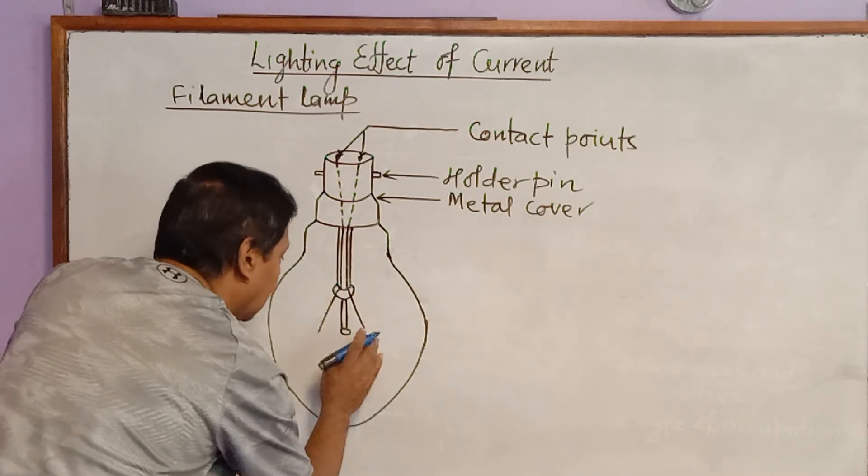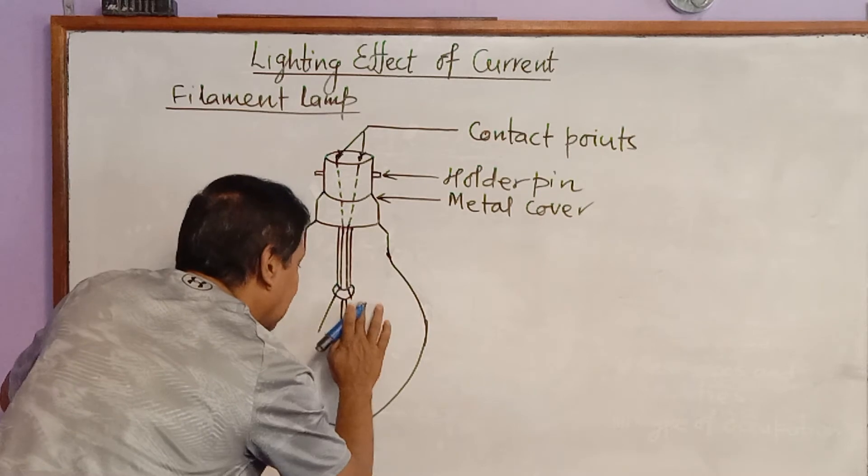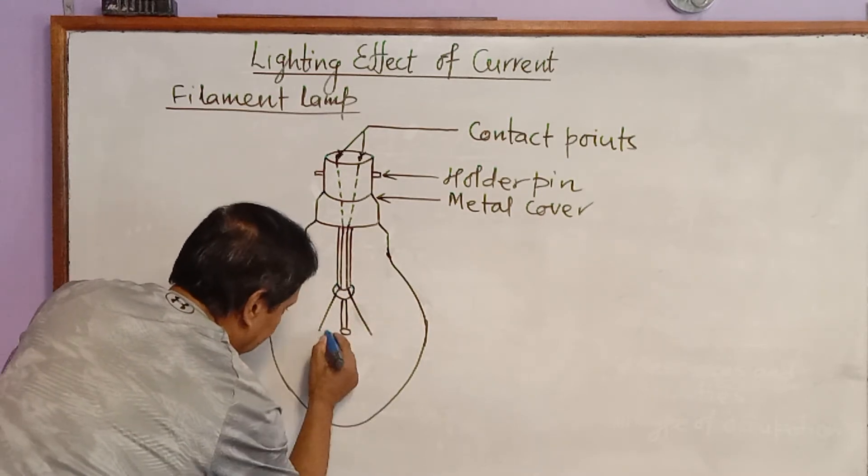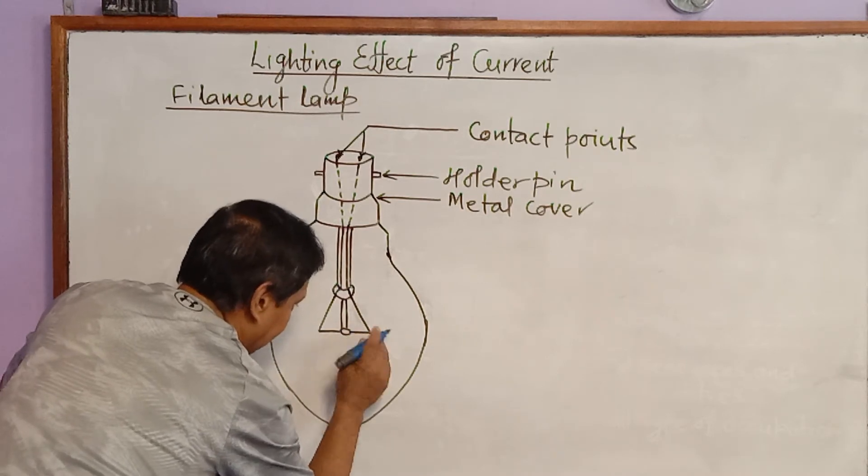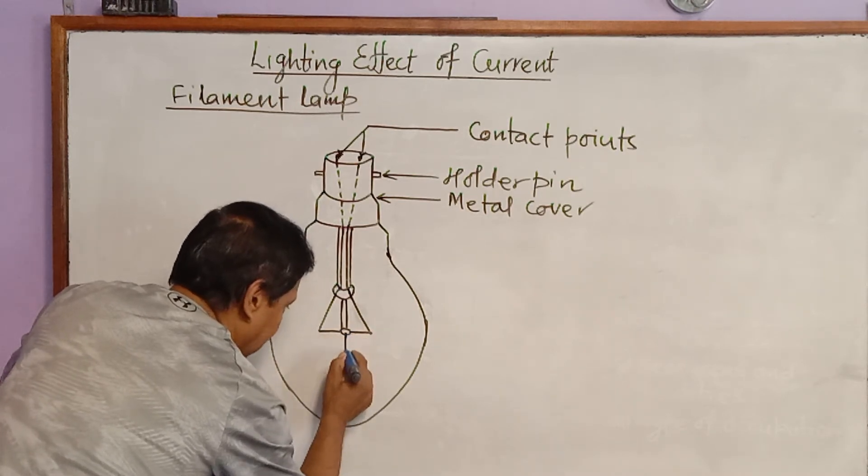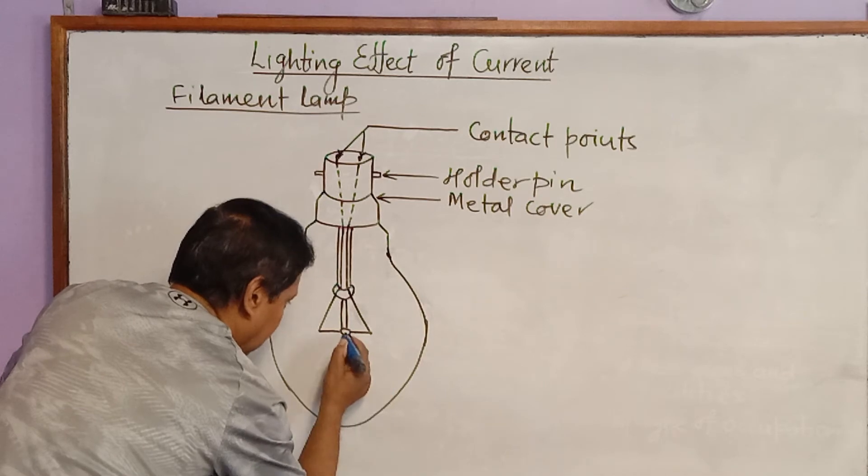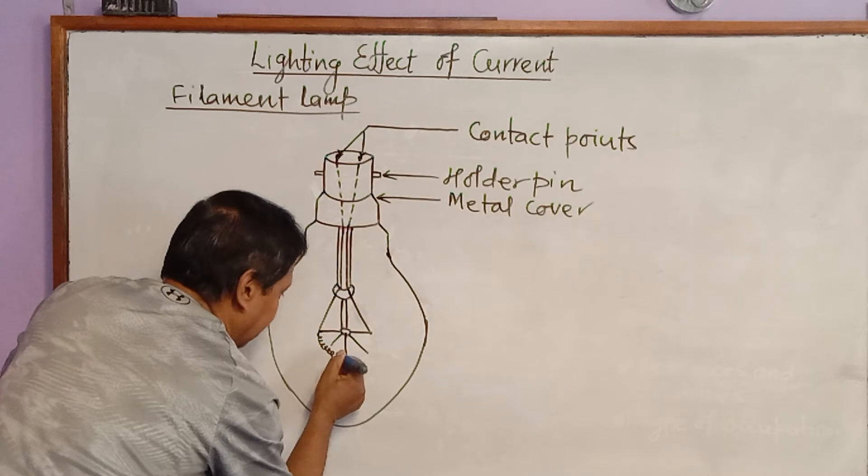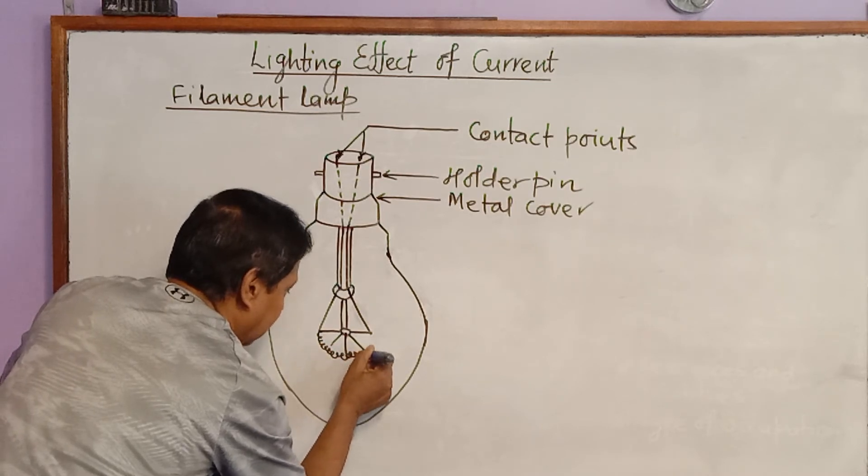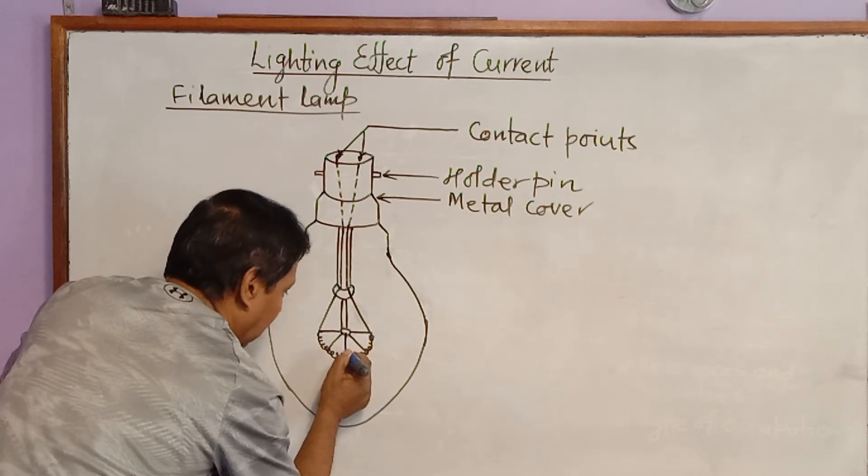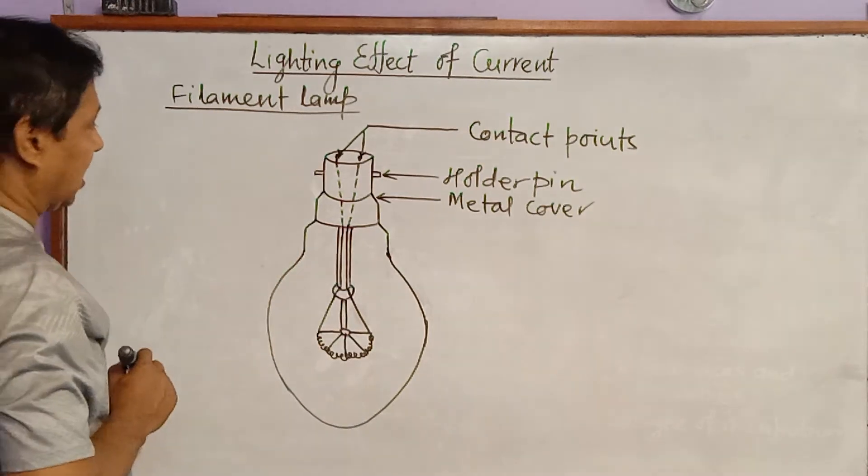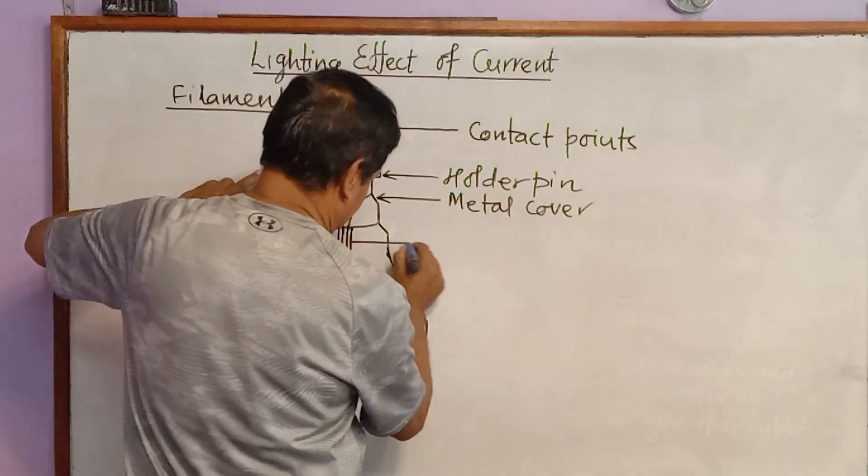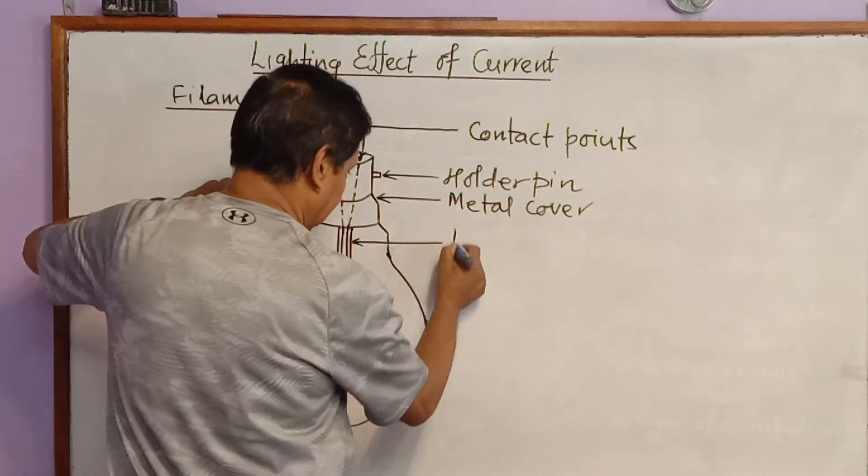And it comes out up to this central part. And there are certain pins which are designed to hold tungsten filament. This is filament which is heavy and that's why to hold it these pins are placed over here. Now we can label like this: this is thick glass.